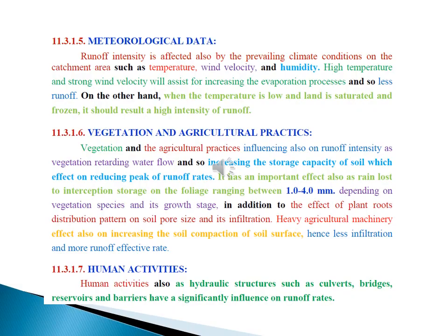Meteorological data. Really, runoff intensity is affected also by the prevailing climate conditions on the catchment area such as temperature, wind velocity, and humidity. Also, vegetation under the catchment blocks influence on runoff intensity and vegetation retards water flow, and so increases the storage capacity of soil which affects reducing peak of runoff lines. Also, human activity as hydraulic structures such as culverts, bridges, reservoirs, and barriers have a significant influence on runoff lines.